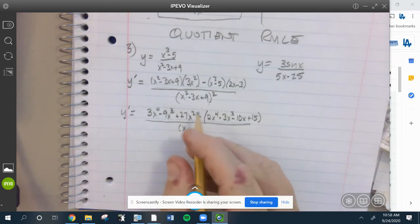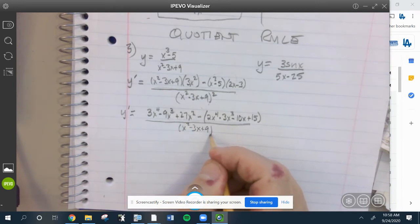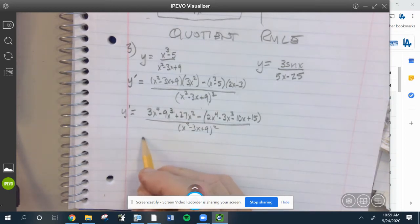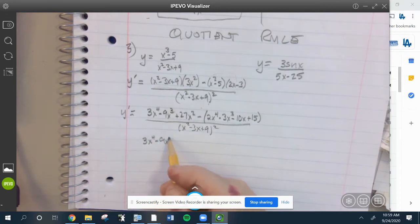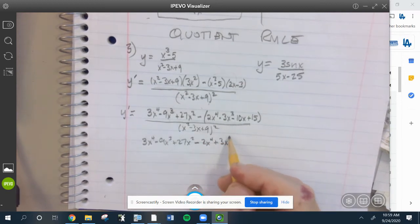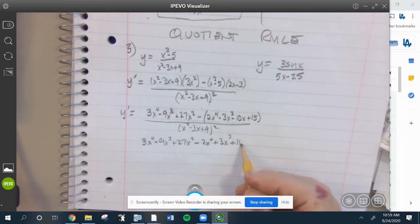So we have 3x to the fourth minus 9x cubed plus 27x squared, minus 2x to the fourth plus 3x cubed plus 10x minus 15, over the denominator squared.